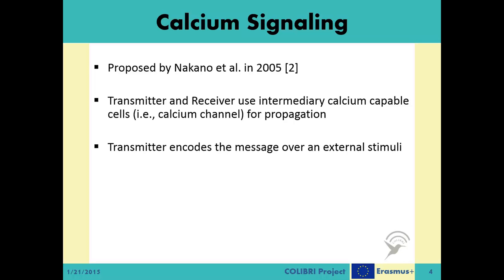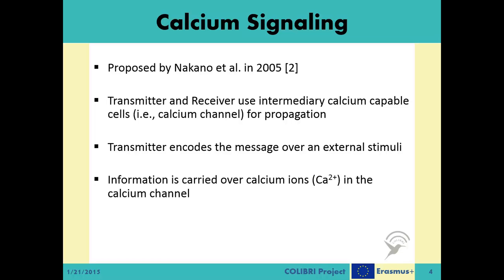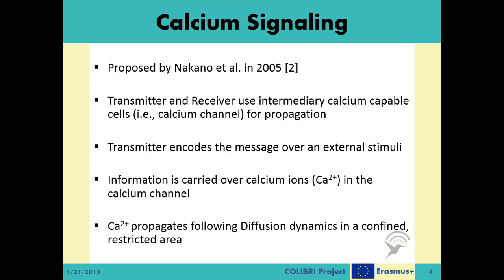The transmitter encodes the message over a stimuli, which triggers the closest cell of the calcium-capable channel. Information is carried in the channel over the calcium ions to reach the other end of the channel, which is close by to the receiver. The system is somewhat akin to the CVD system, in the sense that the information-carrying particles — the calcium ions and the IP3 molecules — are propagating via diffusion dynamics. However, unlike the CVD system, the environment is much more restricted and controllable in the calcium signaling system.